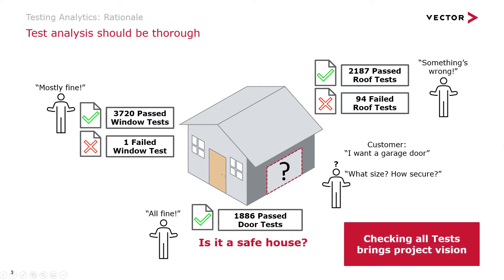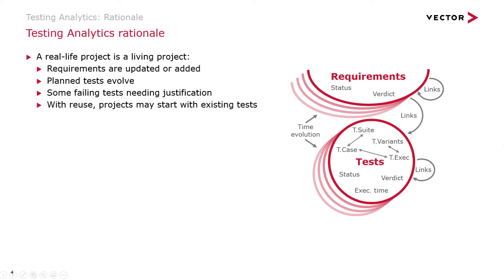We clearly understand that the lack of definition of requirements literally affects the test activities, so looking at the overall system is very important. In real life we are working with living projects where requirements keep updating, being added or removed. We have planning to respect and we have to consider human feedback to justify choices and temporary failures in the test activities. We also promote reuse so we avoid starting from scratch again and again.